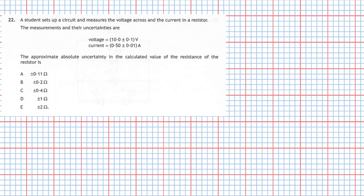The current equals 0.50 plus or minus 0.01 amps. The approximate absolute uncertainty in the calculated value of the resistance of the resistor is — and we're given five choices. What we have to do first of all is work out what the percentage uncertainty is in each of the measurements.